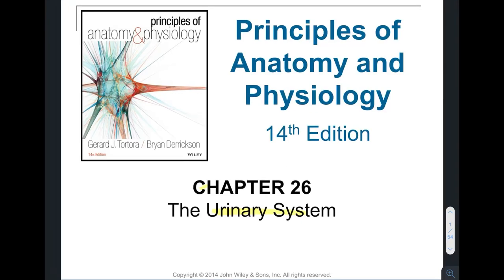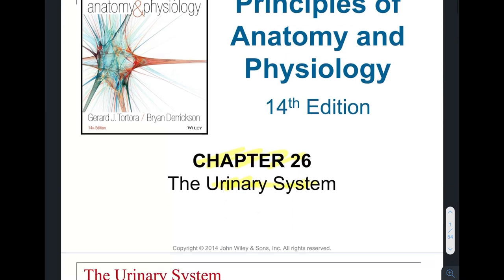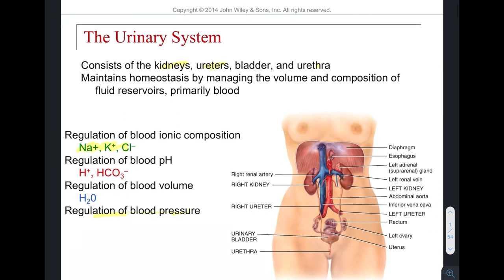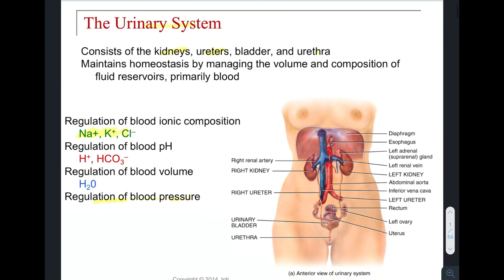We're going over Chapter 26, the urinary system. The first thing to look at is what the urinary system consists of. It consists of kidneys, ureters, the bladder, and the urethra. These are the anatomical structures.